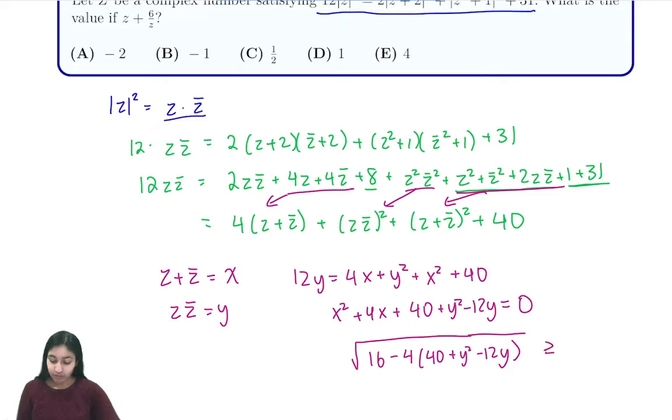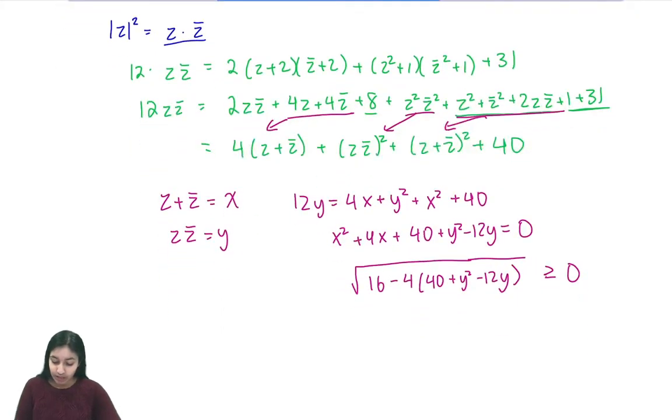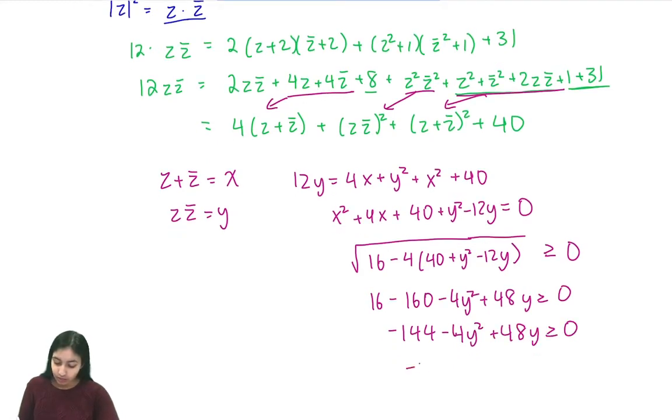So with that knowledge we're going to expand it and we'll get that 16 minus 160 minus 4y squared plus 48y is greater than or equal to zero. So now we can simplify and divide by 4 and we get that negative 144 minus 4y squared plus 48y is greater than or equal to zero. Dividing by 4 gives us that negative y squared plus 12y minus 36 is greater than or equal to zero.